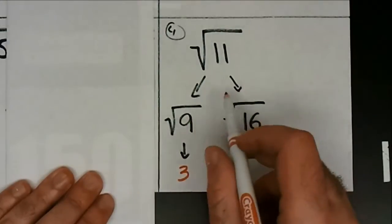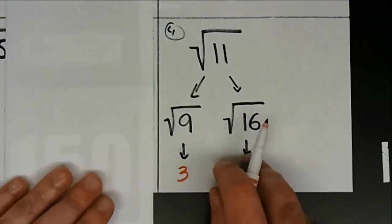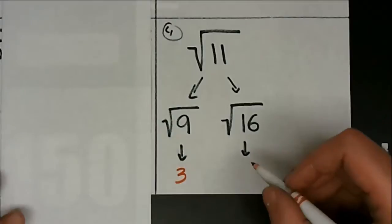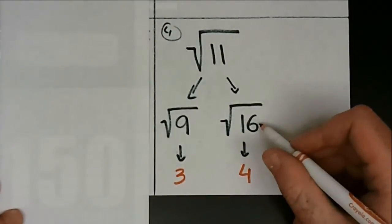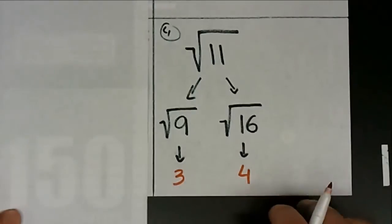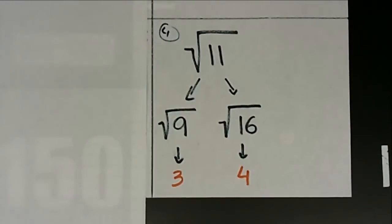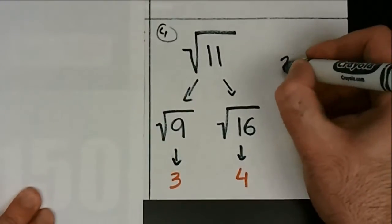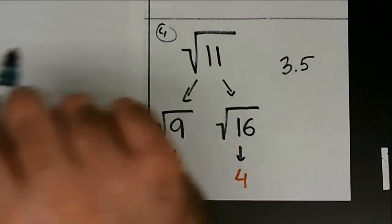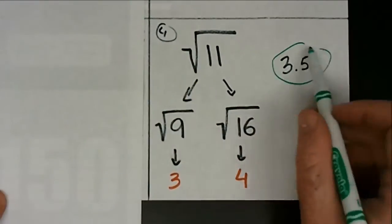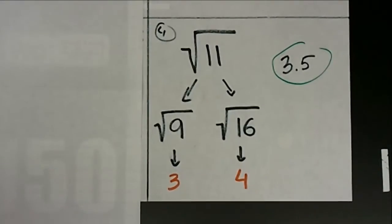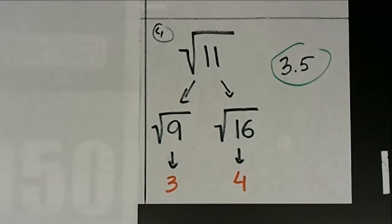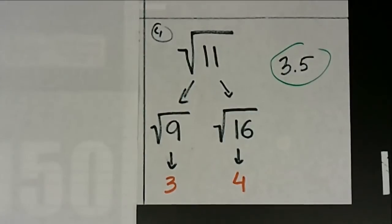3, because 3 squared — the exponent and the radical go away. What about 16? 4, because 4 squared, or 4 to the second power — the second power and the radical cancel out, so 4 comes out. And what's in between 3 and 4? 3.5. Now, 11 is definitely closer to 9 than to 16, so the answer is probably more like 3.4, maybe even 3.37. But again, we're estimating, and that's good enough for the estimate. Questions on 4?